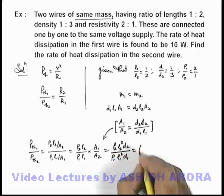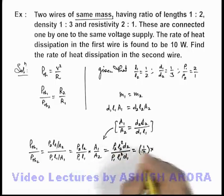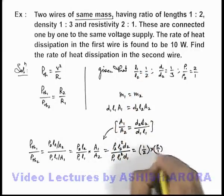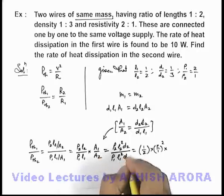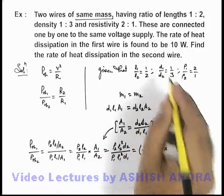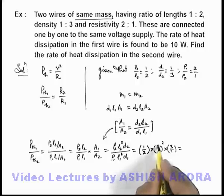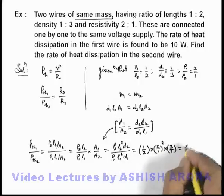ρ2 by ρ1 as 1 by 2, multiplied by L2 by L1 as 2 by 1, so this is 2 by 1 squared, multiplied by d2 by d1 which is 3 by 1. On simplifying, this will be 4 multiplied by 3, which is 12 by 2, equals 6.